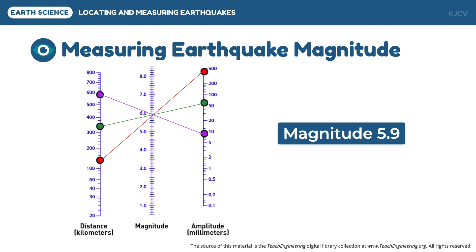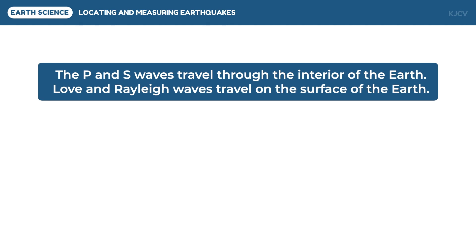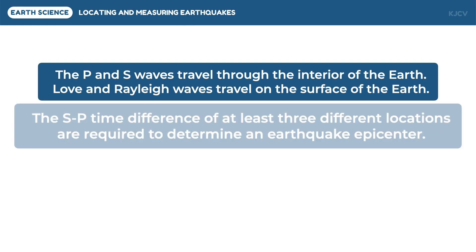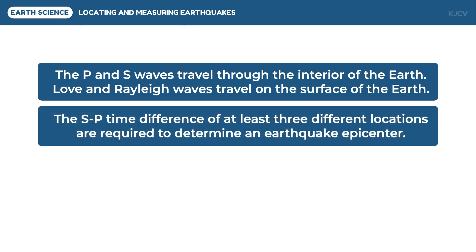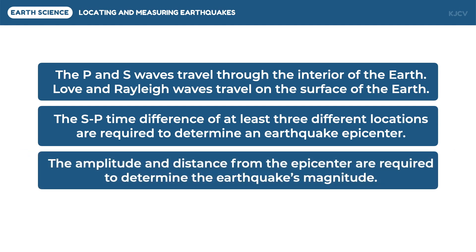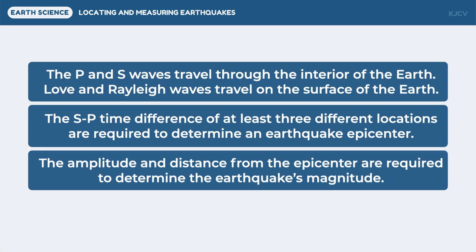To summarize this lesson: the P and S waves travel through the interior of the earth; Love and Rayleigh waves travel on the surface of the earth; the S-P time difference of at least three different locations are required to determine an earthquake epicenter; and the amplitude and distance from the epicenter are required to determine the earthquake's magnitude. That ends our discussion on locating and measuring earthquakes.